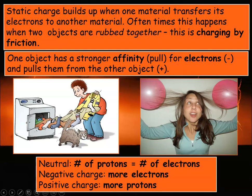The key is that one object has a stronger affinity for electrons — affinity just means a pull, a liking for that thing. The other object will become the opposite charge. Something is neutral if it has the same number of protons and electrons; negatively charged if there are more electrons; and positively charged if there are more protons. So that's what's happening with the balloon and your hair — one is getting electrons, and the other is giving them up.